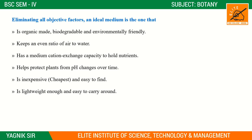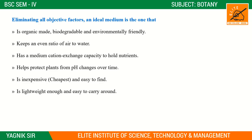Lava rocks can be used in drip systems and aeroponic systems. So, to summarize all the growing mediums: the ideal medium should be organic, biodegradable, and environmentally friendly; keep an average ratio of water to air; have cation exchange capacity to hold nutrients; help protect plants from pH changes over time; be inexpensive, easily available, lightweight, and easy to carry. In the next lecture, we will discuss the different types of hydroponic systems and how they work.